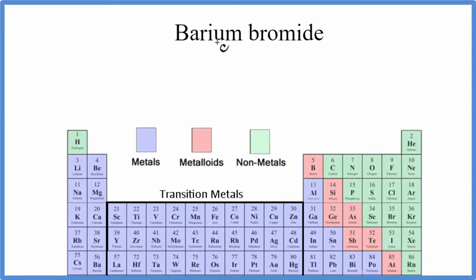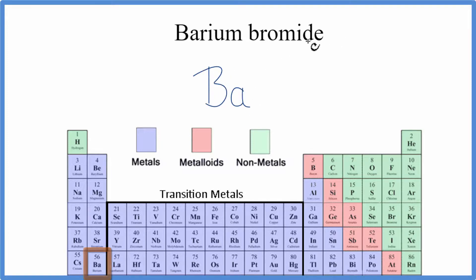To write the formula for barium bromide, we'll go to the periodic table. We look up barium — that's Ba. And bromide, that's the bromine — we'll look that up, and that's Br.